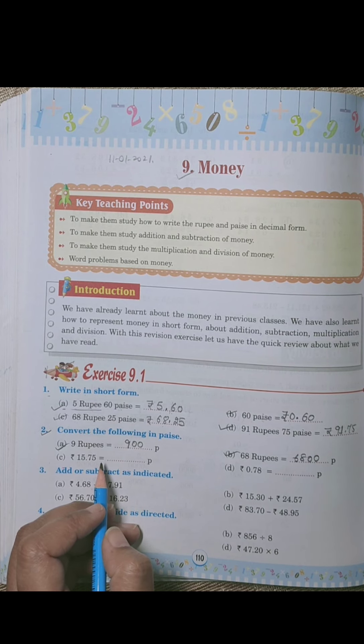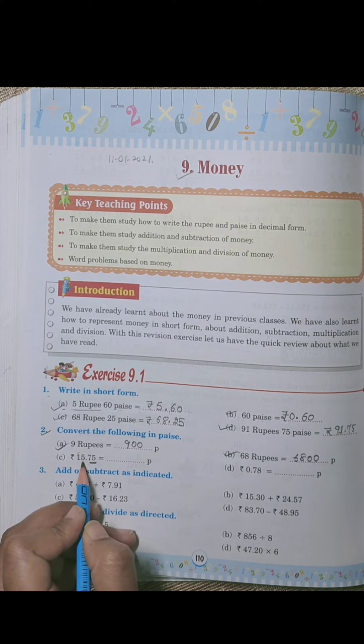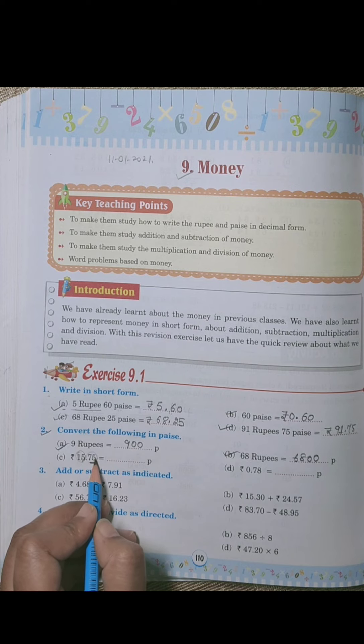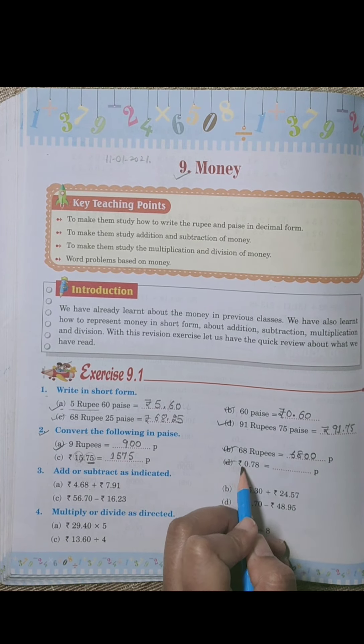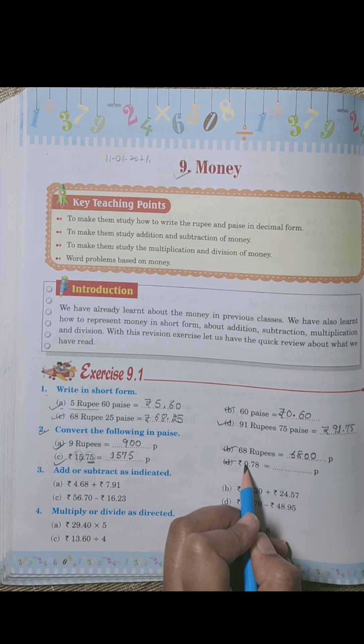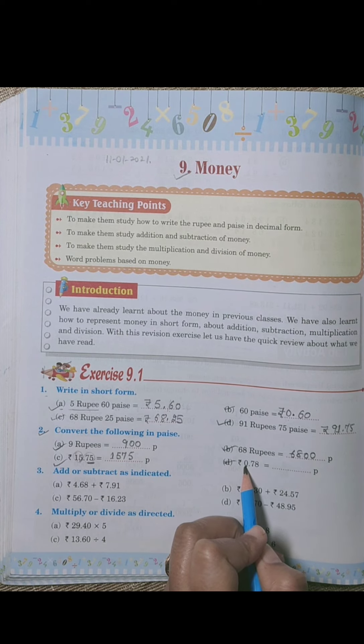So however many rupees are mentioned, we multiply them by hundred. If paise are also mentioned, the paise are indicated by the number after the decimal point. So rupees 15.75, we multiply 15 by 100 to get 1500, plus 75 paise equals 1575 paise. Next is rupees 0.78.